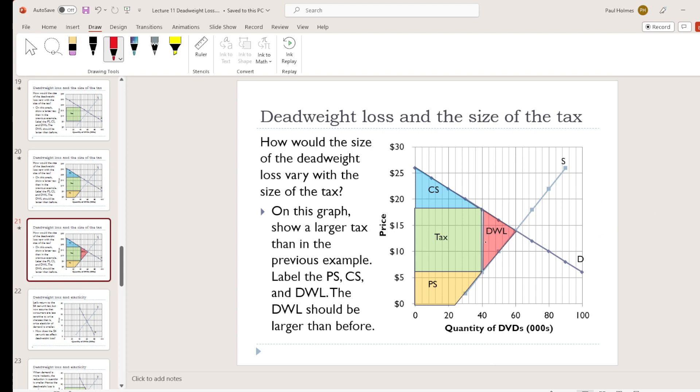There's a couple of different ways you can see this. You can recognize that this is the area, this is a triangle, right? And the area of that triangle must have multiplied in four by size, because both its dimensions doubled. Our deadweight loss is the area of that triangle, one half times the base times the height.